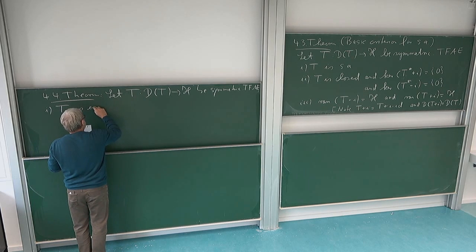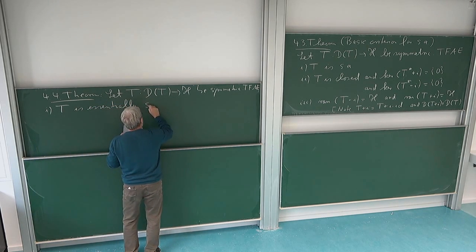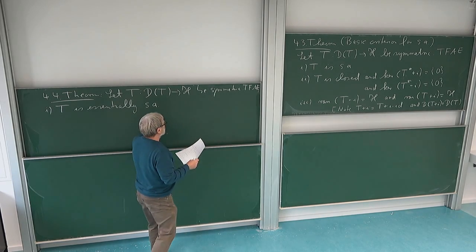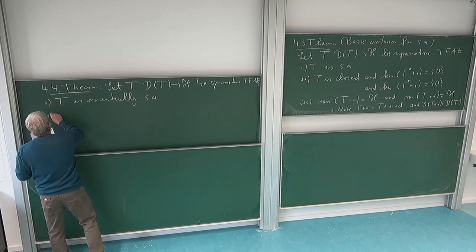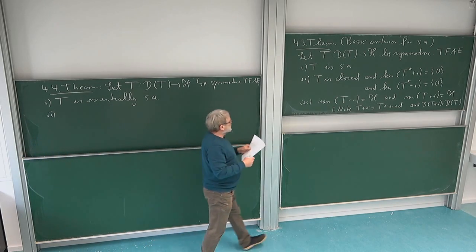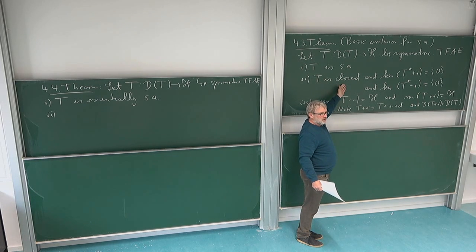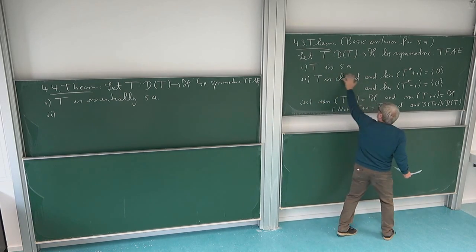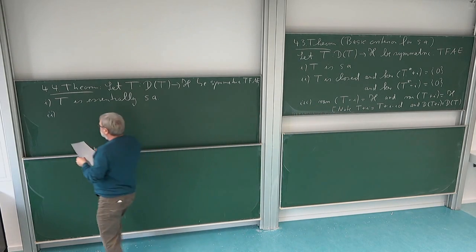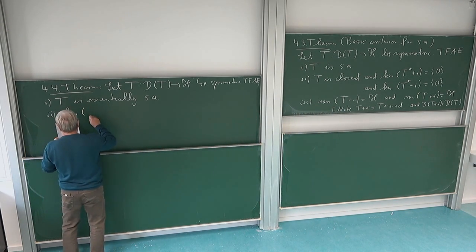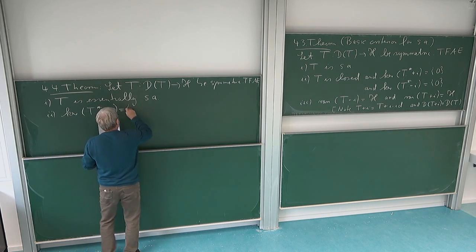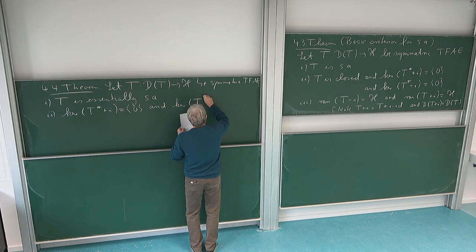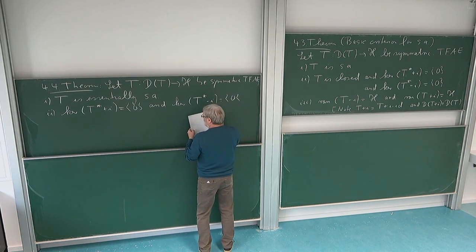So T is essentially self-adjoint, which means, of course, the closure of the operator is self-adjoint. And then we can apply this theorem to the closure. But we want to write things down in terms of the operator itself. The only thing which we are losing there is that T has to be closed - that's exactly what makes the difference between essentially self-adjoint and self-adjoint. So we just have to omit this, and the conditions on the kernels are the same: the kernel of T* plus I should be trivial and the kernel of T* minus I should be trivial.